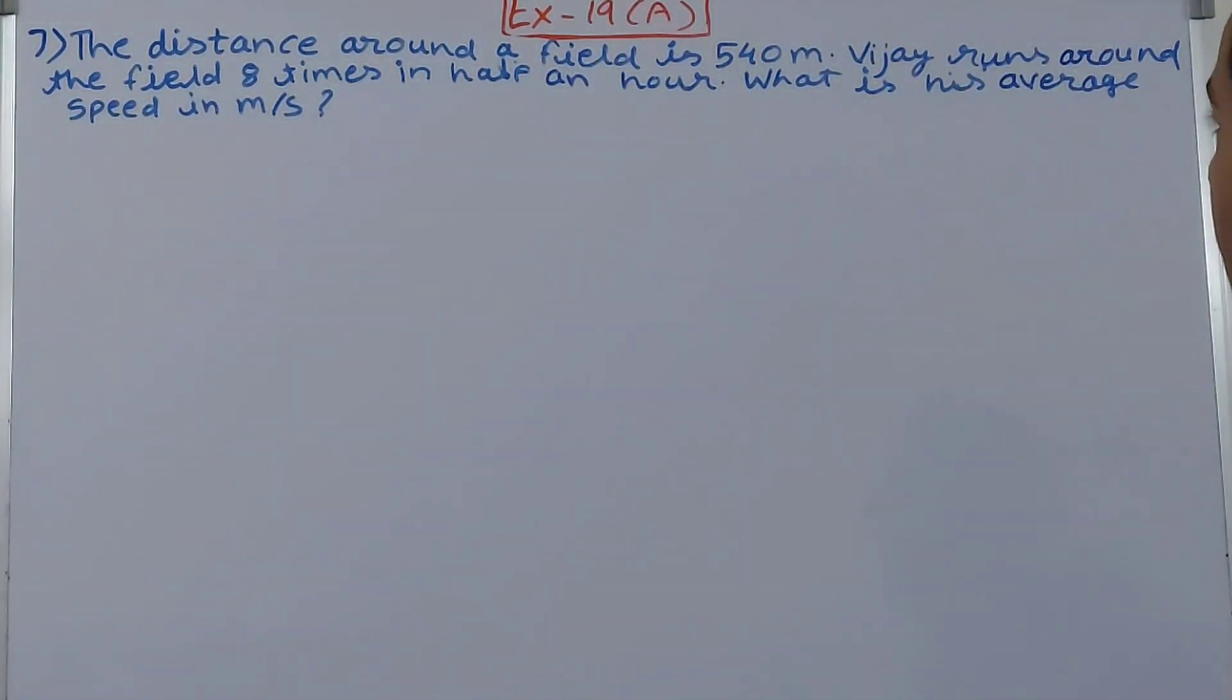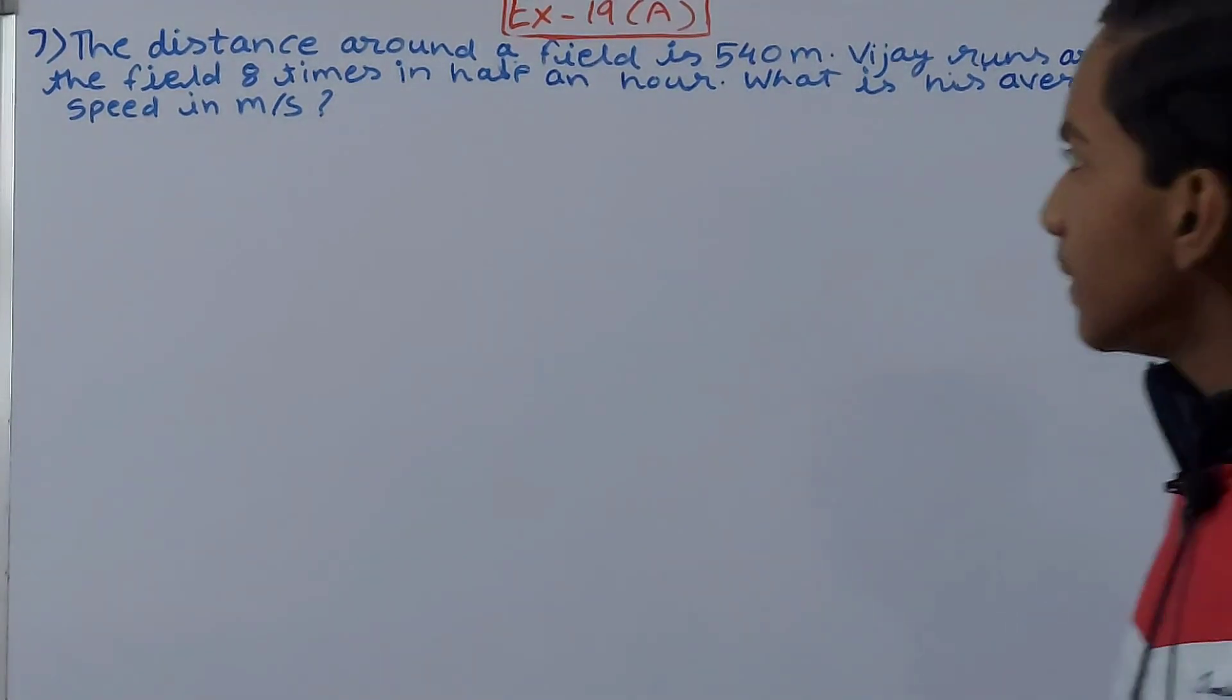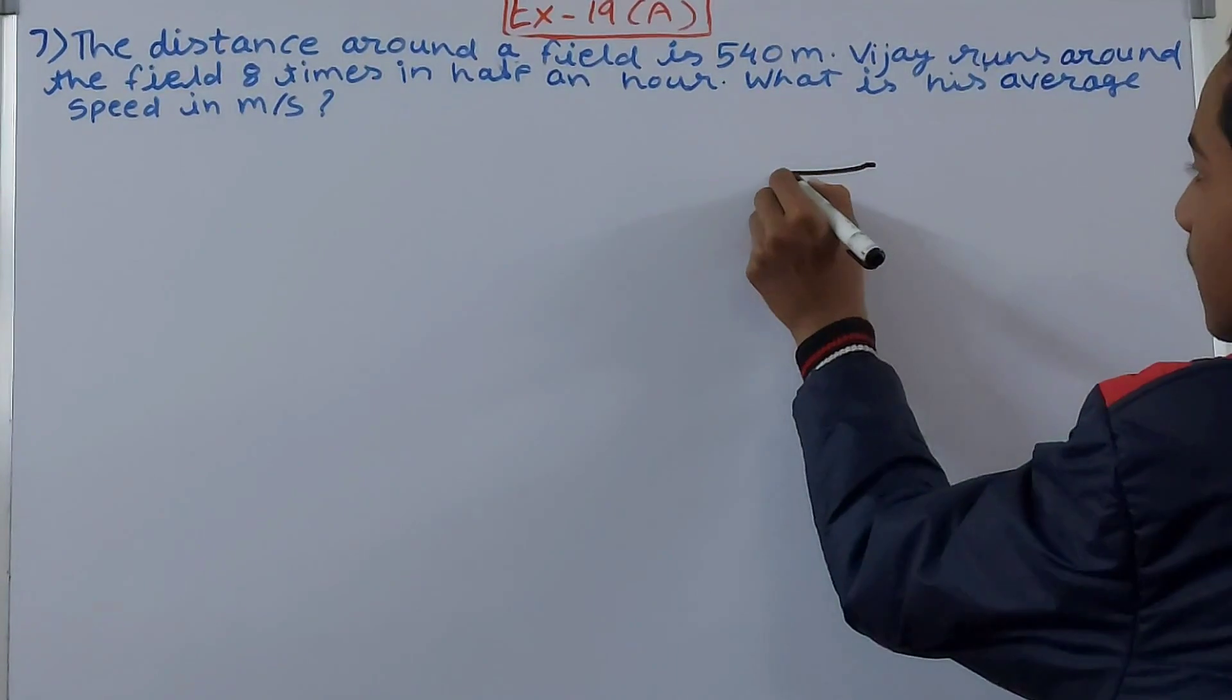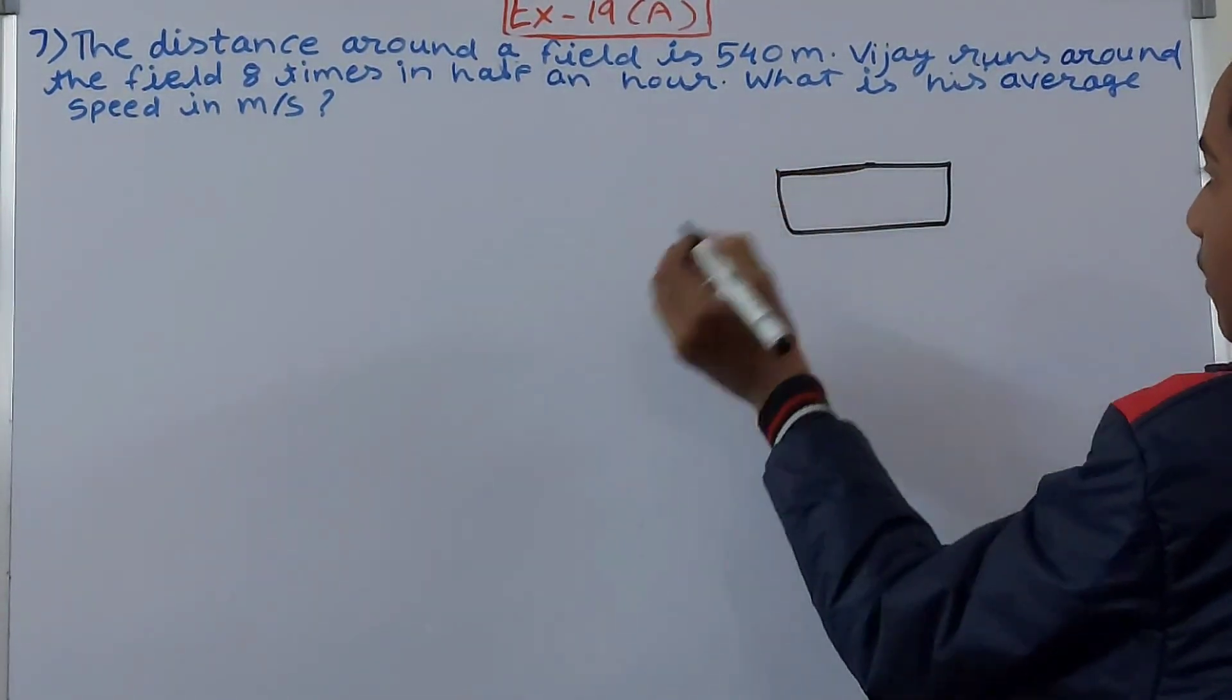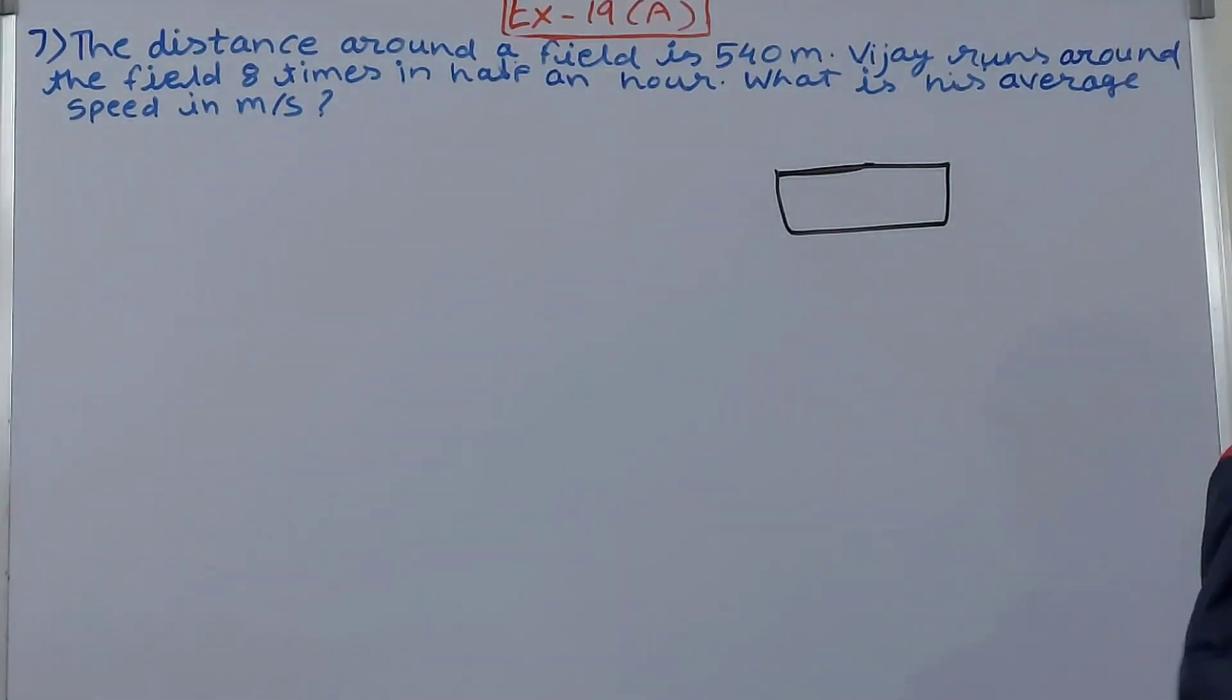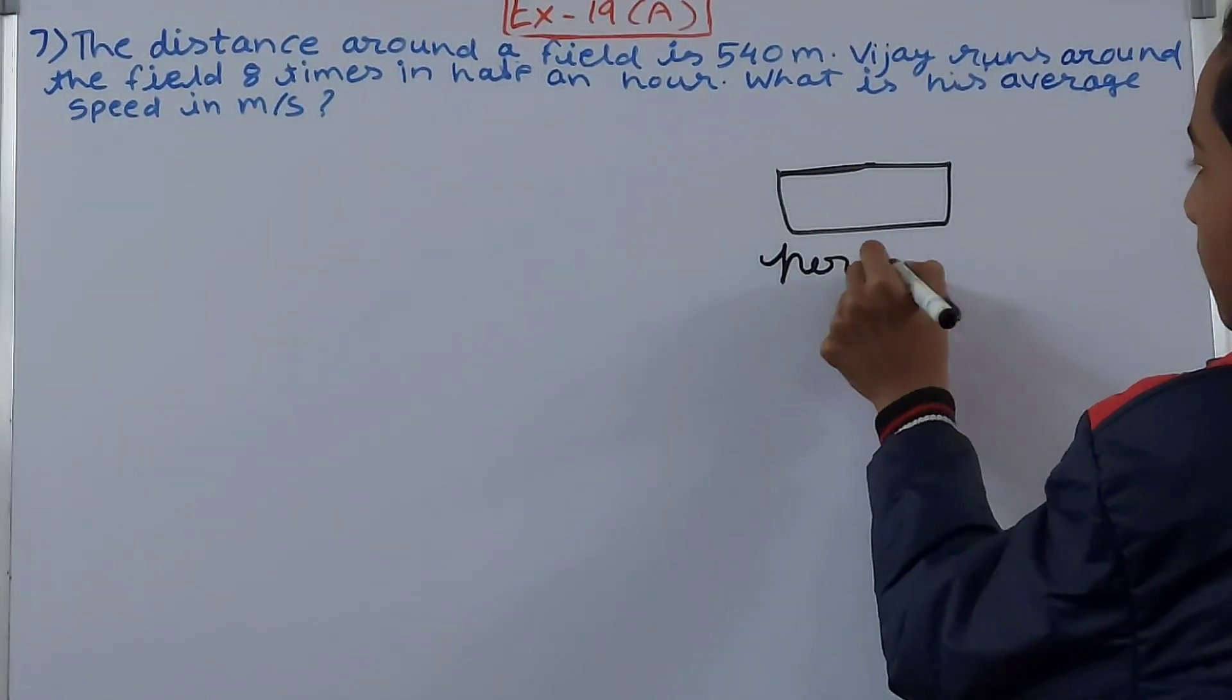Vijay runs around the field 8 times in half an hour. What is his average speed in meters per second? So basically, let's say there is a field like this - there is a rectangular field. The shape hasn't been specified so you can take it anywhere. So the perimeter of this is what?